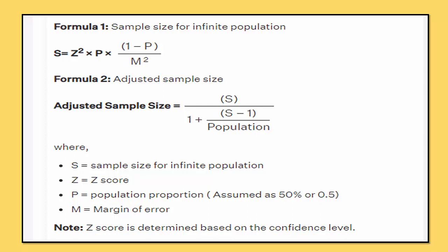In some books, an alternative notation is used: S = Z-squared × P × (1 − P) / M-squared. Comparing with our previous formula, it is the same — only instead of Q they write (1 − P), and instead of E-squared they use M-squared. Here S is sample size, Z is the Z-value, P is variability or population proportion, and M is margin of error. The adjusted sample size formula becomes: adjusted n = S / (1 + (S − 1) / total population).